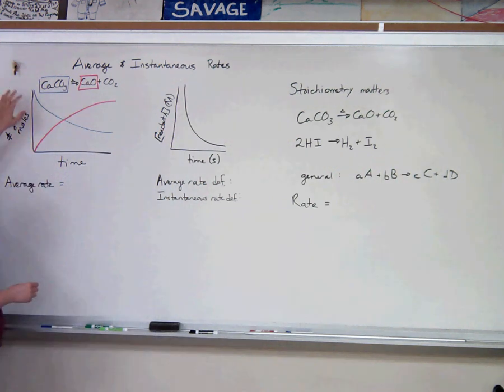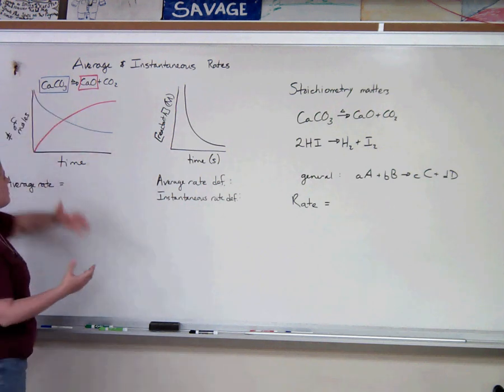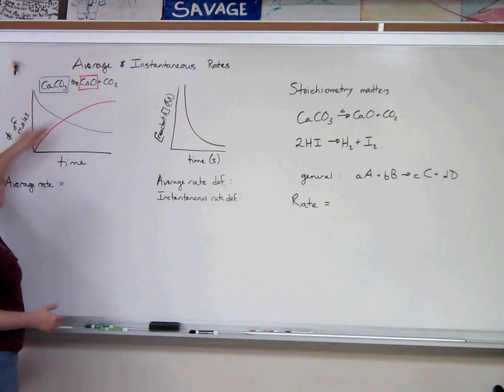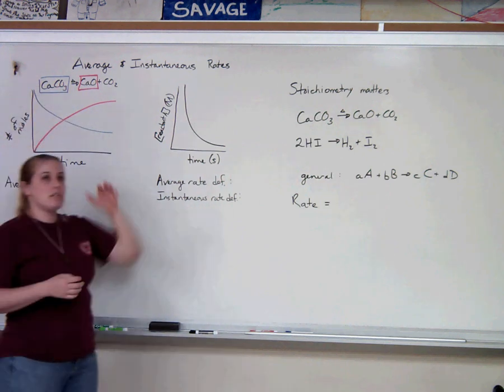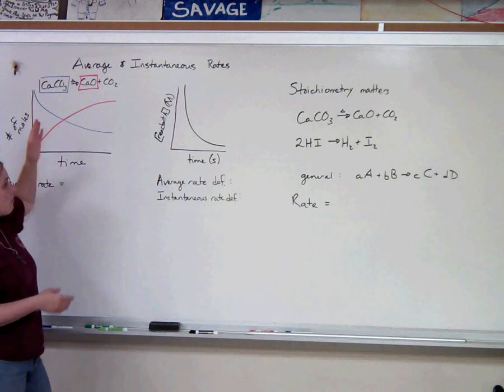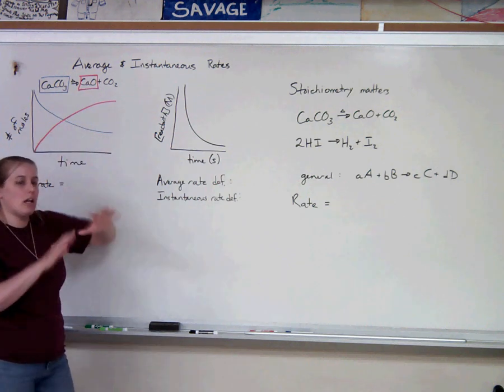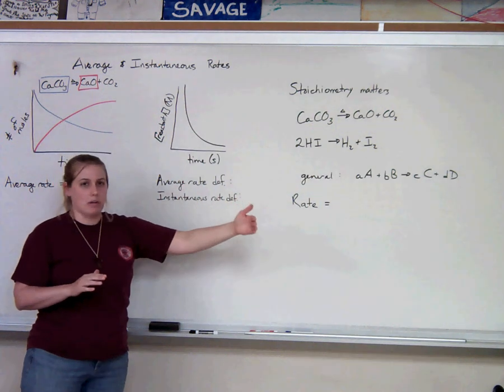As a reaction proceeds from reactants to products over time, the reactants disappear. Obviously, they're reacting and turning into products. And then the products appear, they start at zero, and they start to have some products. You'll notice that these lines are not straight lines. If they were straight lines, that would be saying that the products and reactants are disappearing and appearing at exactly the same rate at each time interval throughout the reaction. That is not true.